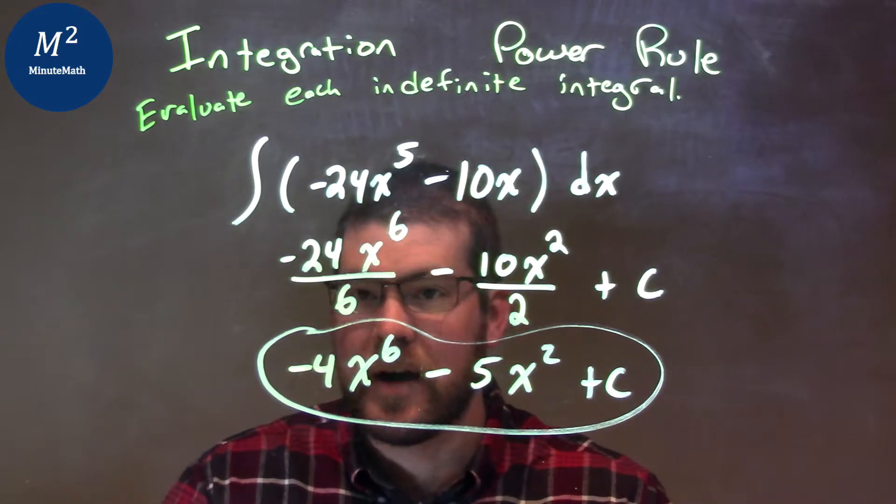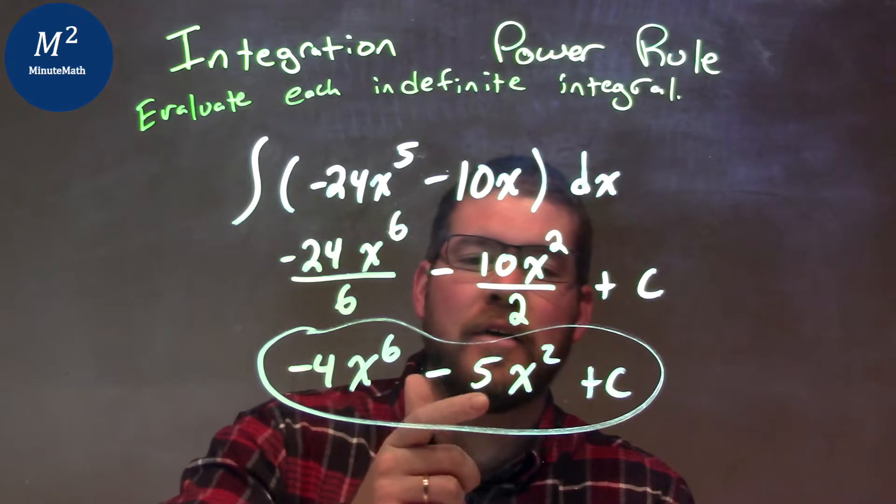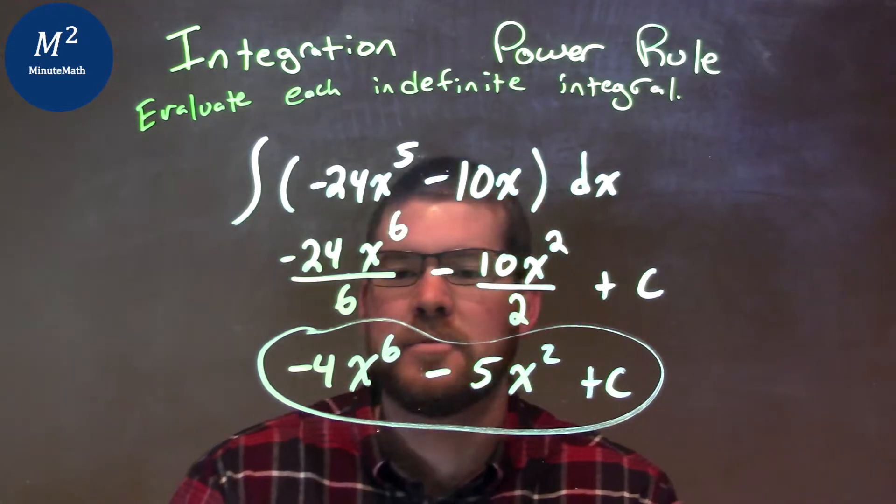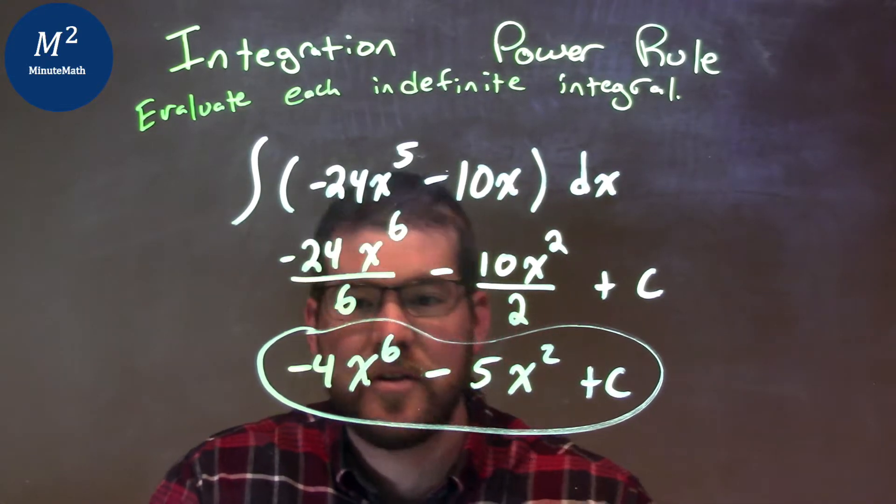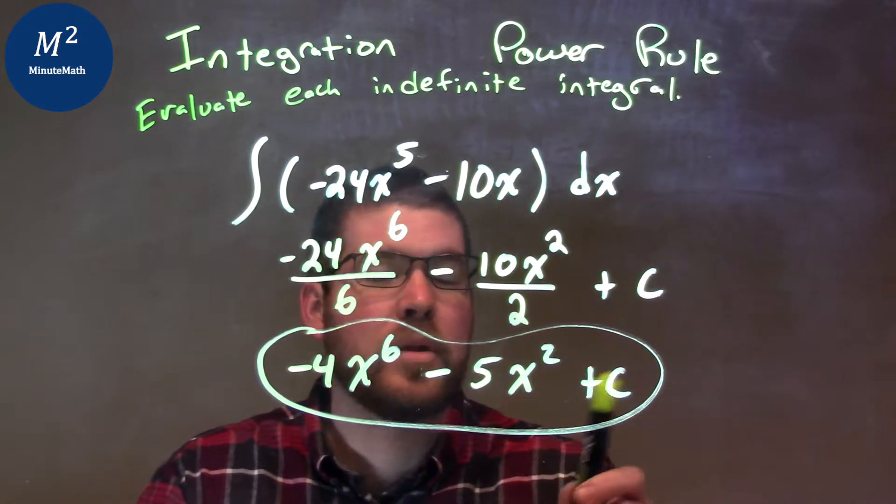From there, we just simplified. Negative 24 divided by 6 is negative 4, and then 10 divided by 2 is 5. Got the negative right there. That's subtraction. So again, the final answer is just negative 4x to the sixth power minus 5x squared plus C.